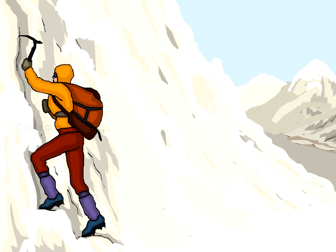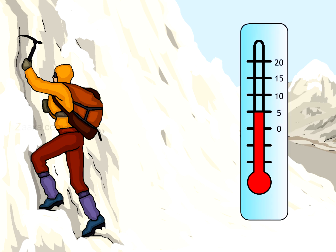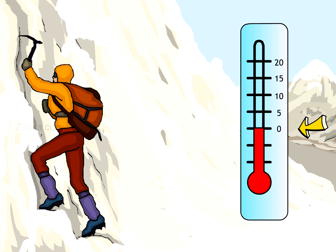Veneet spent a week in Shimla. The temperature was 5 degrees the day he arrived. On the second day it became colder as the temperature dropped from 5 degrees to 0 degrees. On the third day the temperature dropped by a further 5 degrees, meaning it was 5 degrees lower than 0 degrees. How can we express this? Let us learn to express a value that is less than zero.